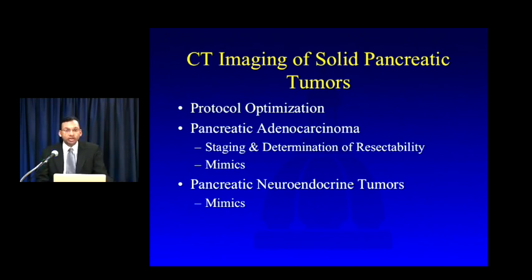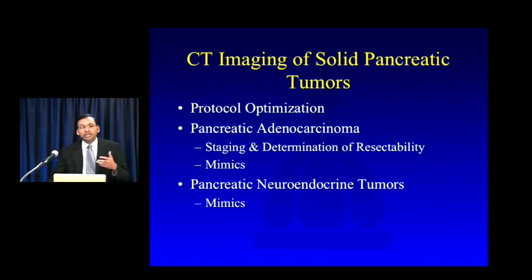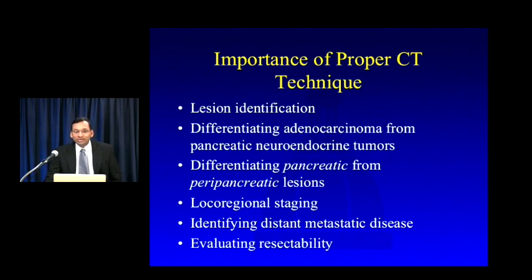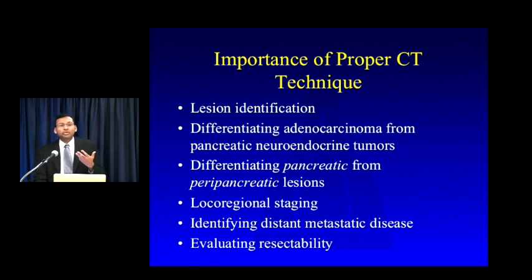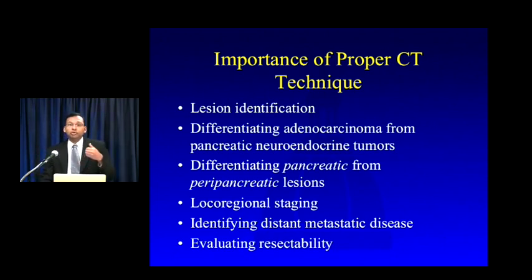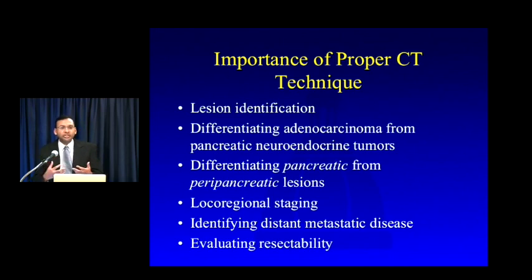For each of these lesions, we'll talk about staging — how you can help the surgeon determine what's resectable and what's not — as well as a few mimics that could look like an adenocarcinoma or neuroendocrine tumor. Having proper CT technique is absolutely critical when imaging a pancreatic mass. Not only does it help identify the lesion, but without the right technique you won't be able to characterize the mass, distinguish pancreatic from peripancreatic lesions, or perform local regional staging and identify distant metastatic disease.